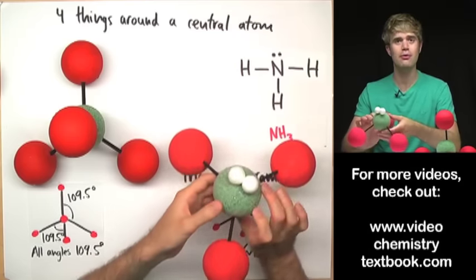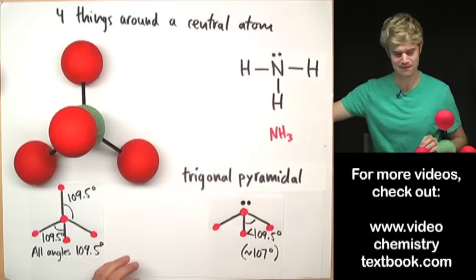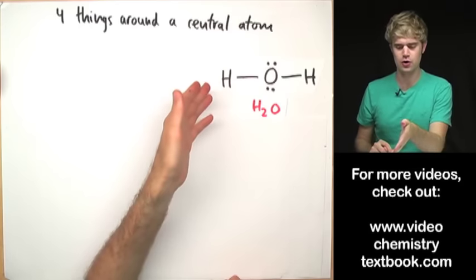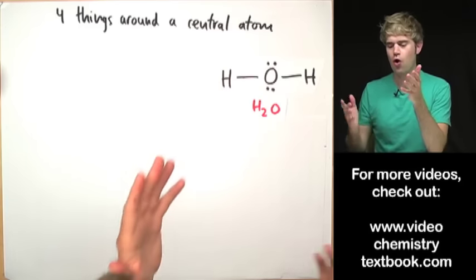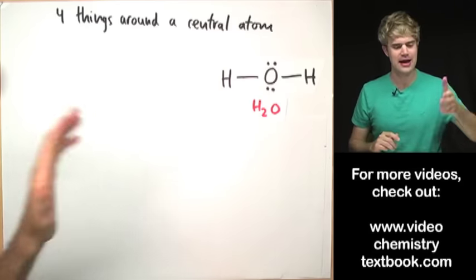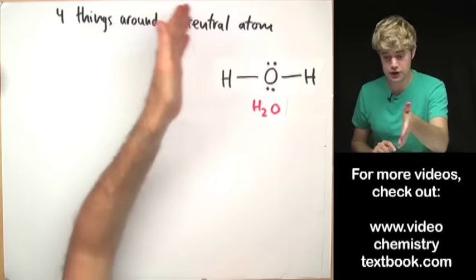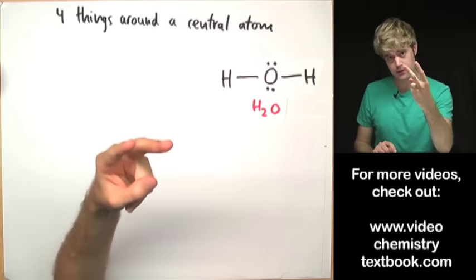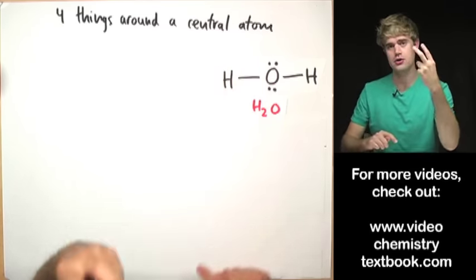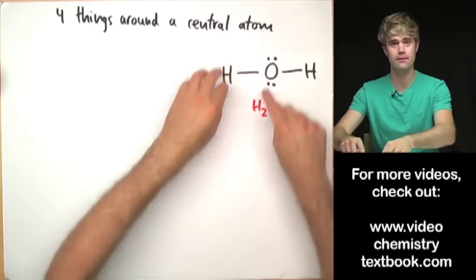One more example and then we're done. Here's the last molecule we're going to look at: water, H₂O. This molecule has four things around the central atom — two of them are bonds and two of them are lone electron pairs.